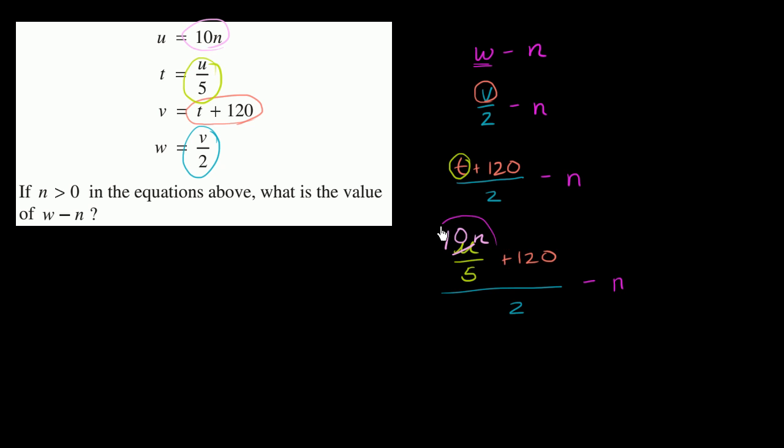So 10n divided by 5 is going to be 2n plus 120, plus 120 over 2. And we could write this as this divided by 2 and that divided by 2. And then of course we have this minus n right over here.